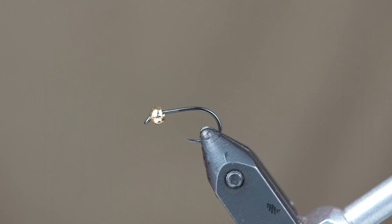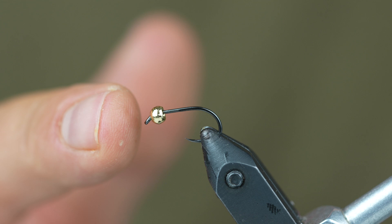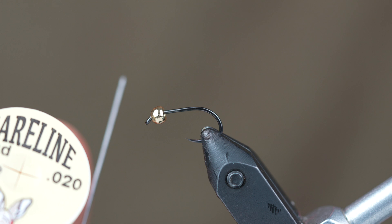Today we're using a 3.3 millimeter gold tactical fly fisher tungsten bead. And then behind that we're going to put a few wraps of .020 inch diameter lead wire. You can step this up or down as your bead size goes up or down.